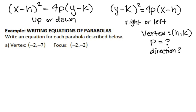Those three things are going to help us determine what equation to use and how to set it up. My first example: I have my vertex at negative 2, negative 7, and my focus is at negative 2, negative 2. Since I have my vertex, I already have my h and my k. What I need to do next is figure out what p is, as well as figure out the direction. I have negative 2, negative 7 and I am going from this point to my focus at negative 2, negative 2.